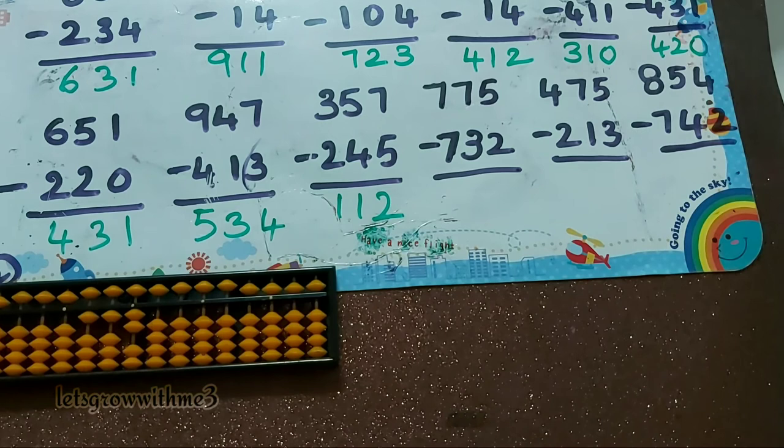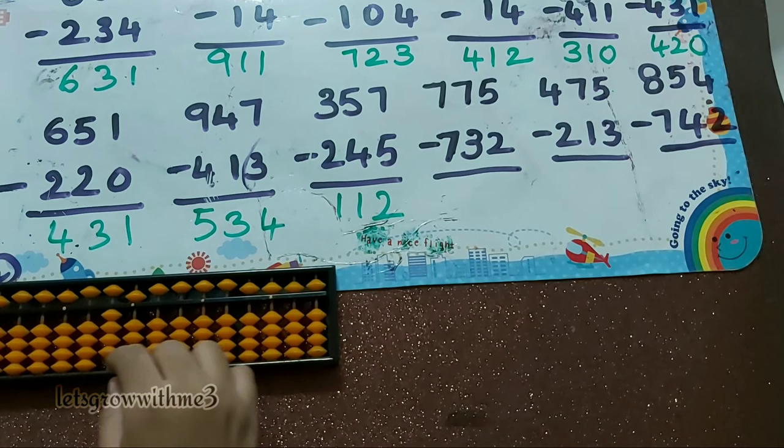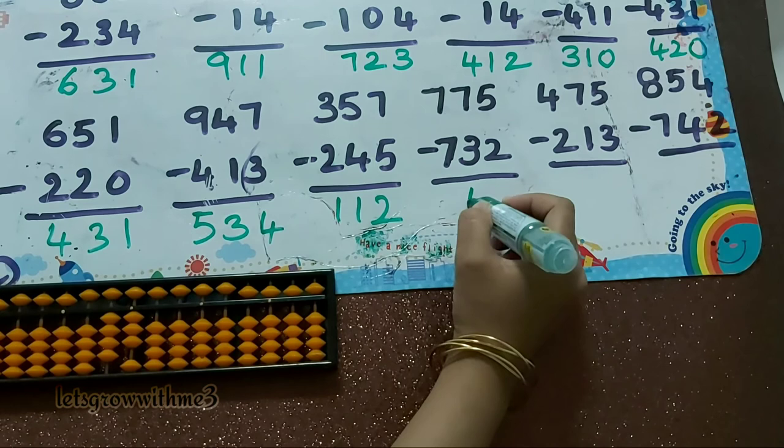Next one, 775 minus 351: minus 7, minus 3 — minus 5 plus 2. Minus 2: minus 5 plus 3. So the answer is 424.